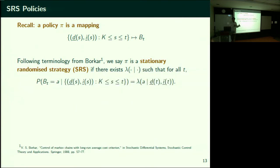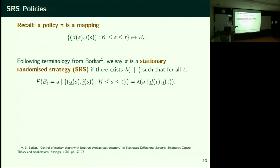This is a controlled Markov chain, not a Markov chain per se. DT+1 and IT+1 may not depend only on DT and IT — given the BT, yes, if I tell you which arm was selected at this time, you can update based on the past. But in general, delays and last observed states could depend on the entire history. BT is your action. If it's a stationary randomized policy, then BT is selected based only on the current state, not on past actions or states.